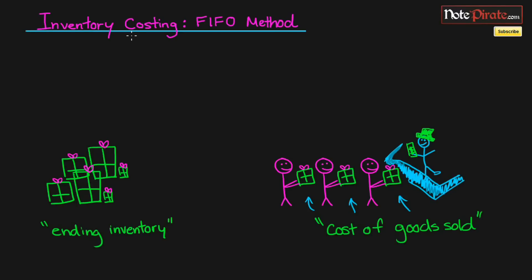You've probably been to a supermarket or grocery store to pick up some eggs, milk, or some other common item. Those items are inventory because that is what they sell. In this tutorial we're going to be covering how to actually expense inventory using the FIFO method.